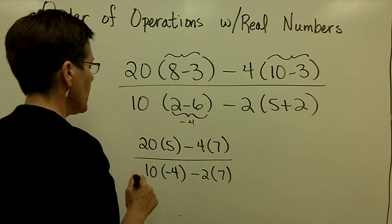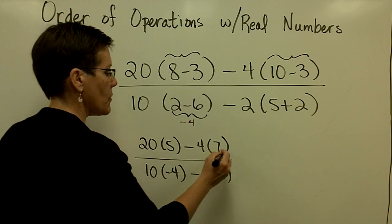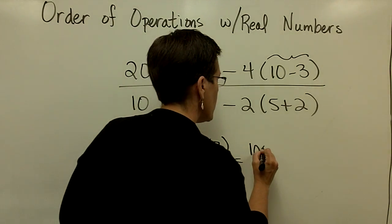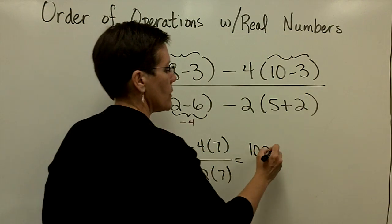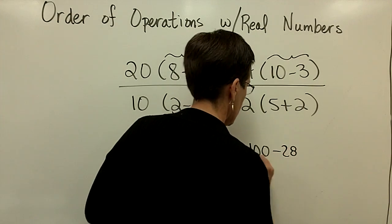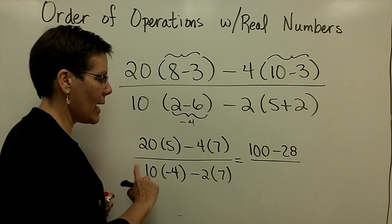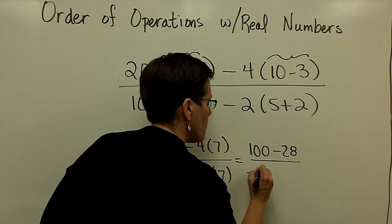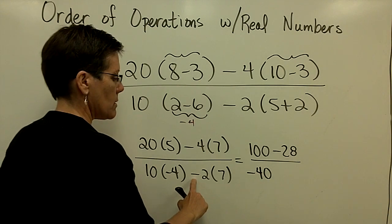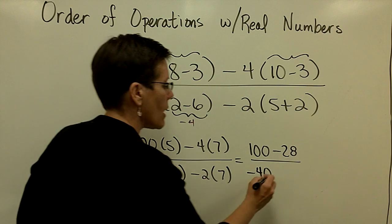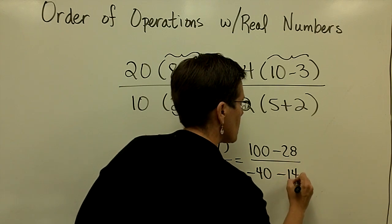Let's now work left to right in the numerator. So I have 20 times 5 is 100, and 4 times 7 is 28. Down here, 10 times a negative 4, positive times a negative is a negative 40. And I'm going to subtract 2 times 7, which is 14. So subtract 14.